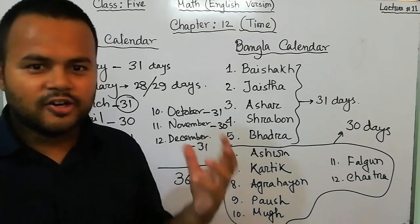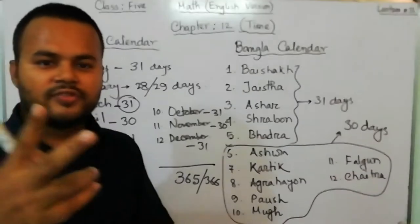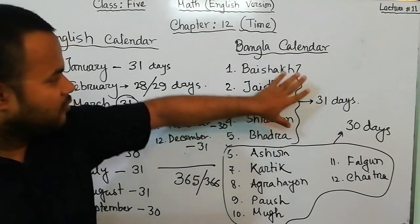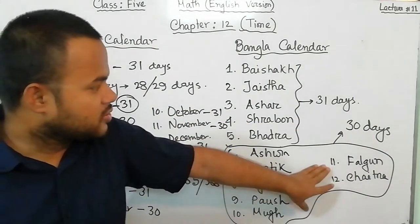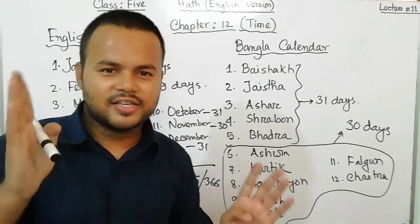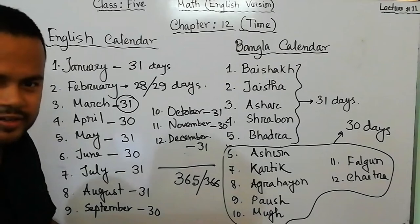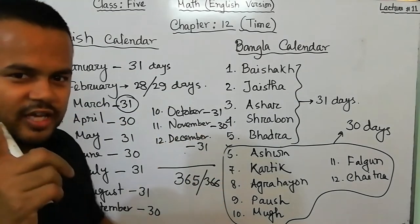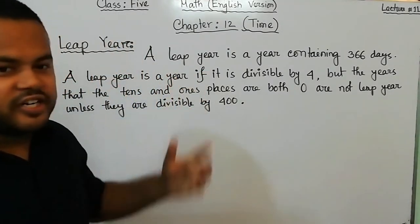I hope all of you understood this. If you follow this trick you don't need to memorize the number of days against each month. So we have learned two types of calendar: Bangla calendar and English calendar. In the Bangla calendar, the first five months consist of 31 days each and the rest seven months consist of 30 days each. The English calendar is a little bit more complex, so we use the hand trick.